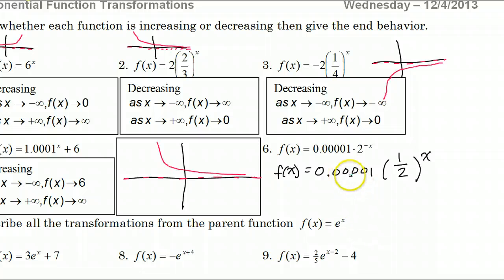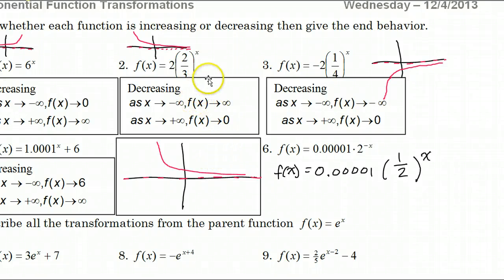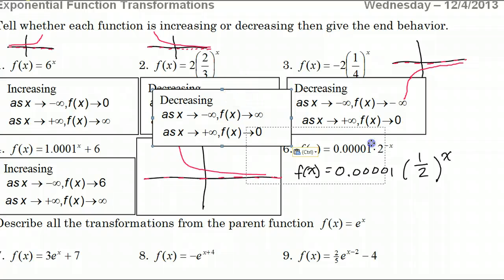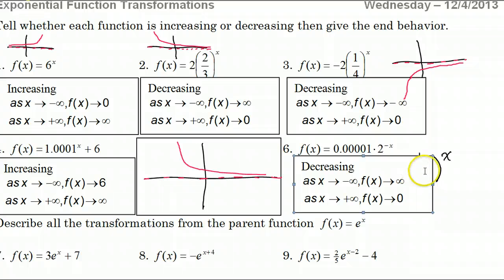For these problems, we're ignoring the a value — ignoring the number in the front — except if it's reflected over the x-axis; if it's negative, we have to flip it upside down. So going by this, the graph is decreasing. On the left, the graph is approaching infinity because as we go left it goes into the sky. On the right, it is approaching the asymptote of zero. So this would be your answer for number six.